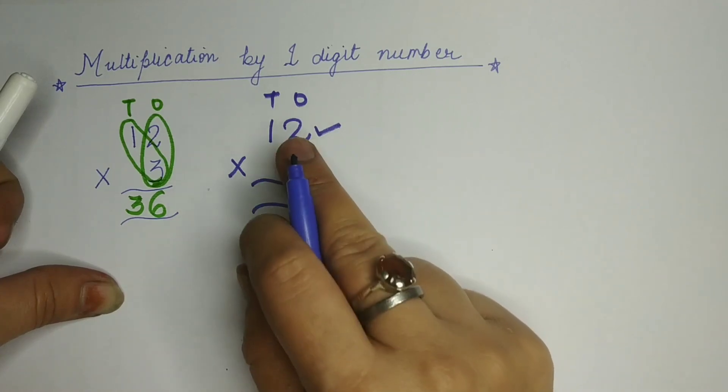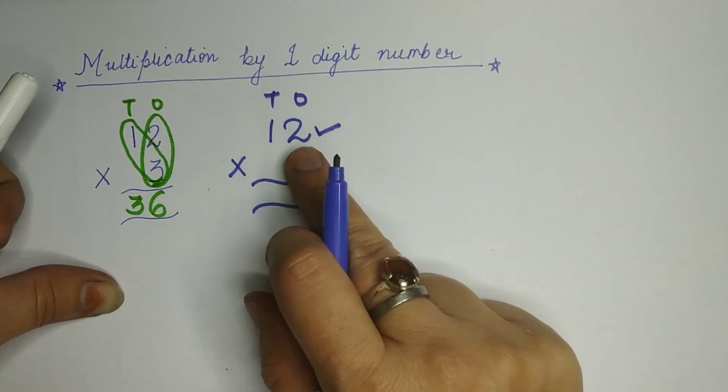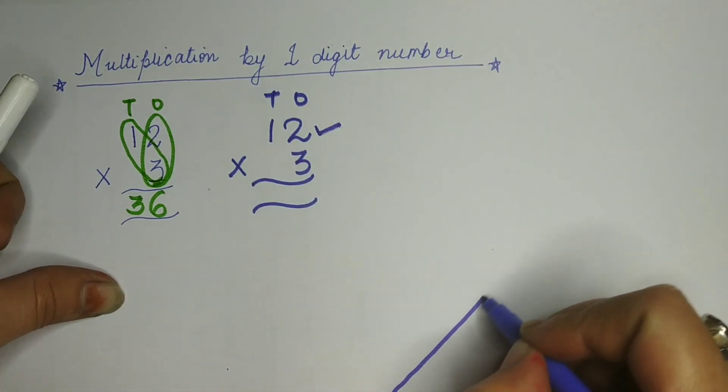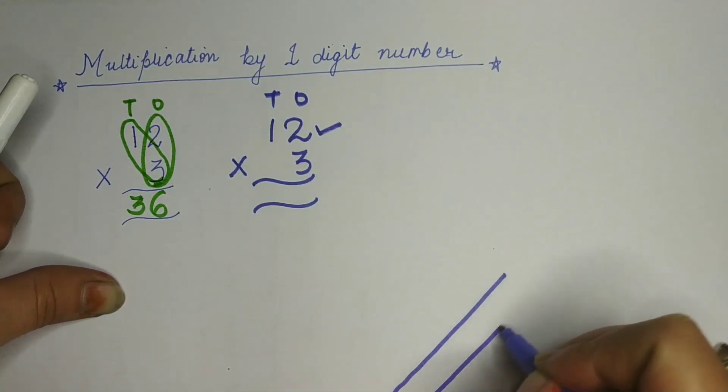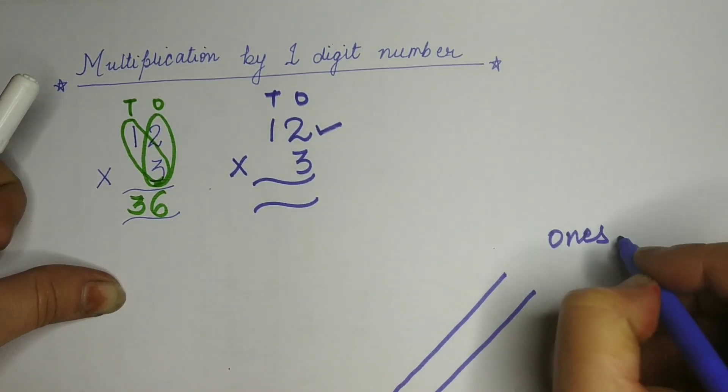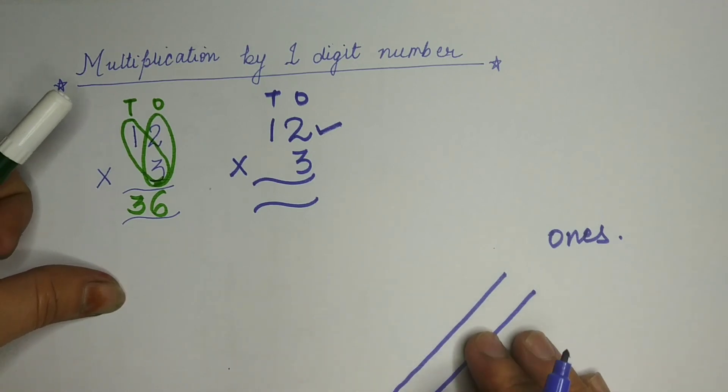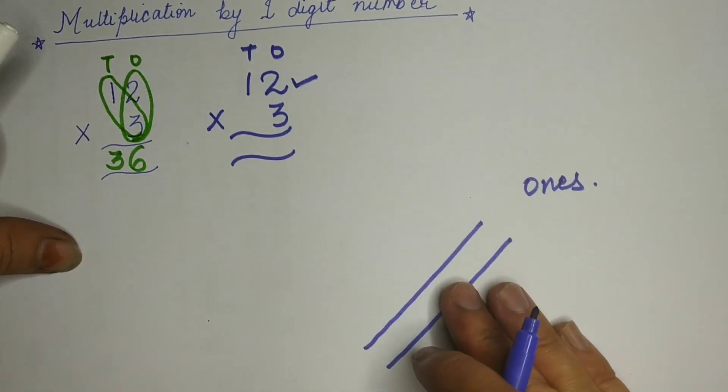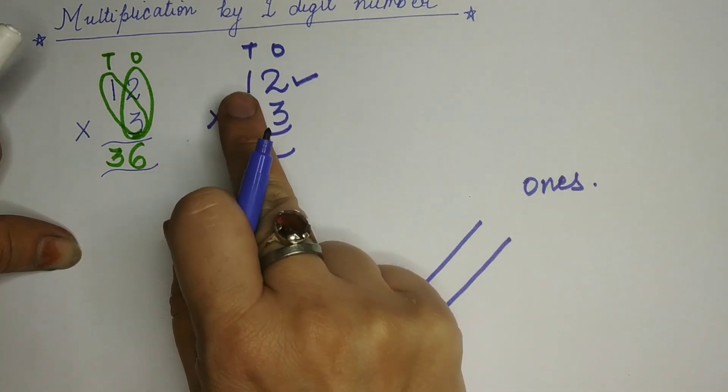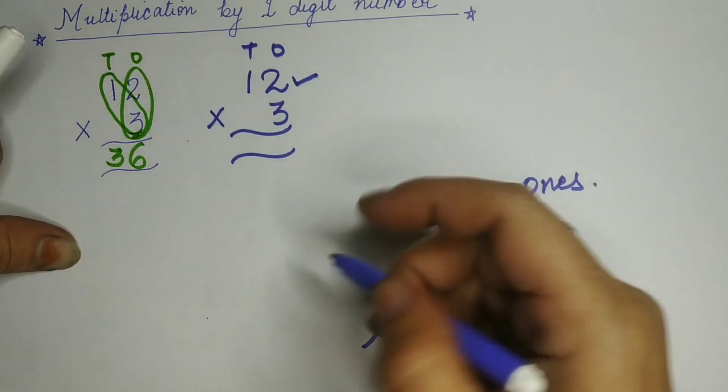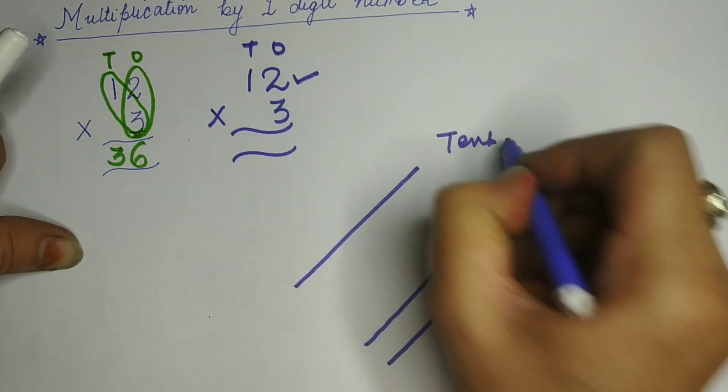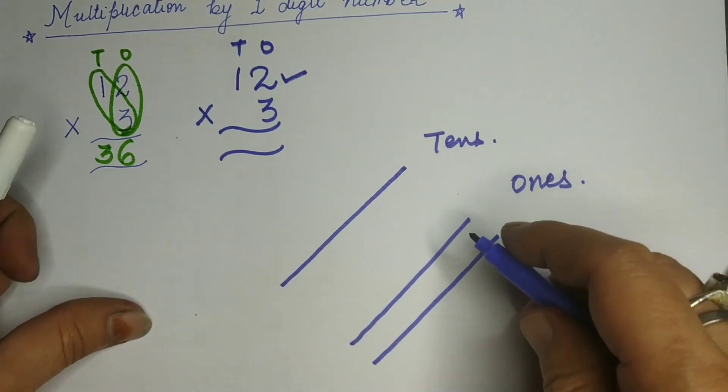We will take once digit. What number is there? That is 2. First of all, you are going to make 2 lines like this. Aap chaaho, toh yehaan likh sakte ho. For your betterment, I am going to write it. So, there is no as such confusion. 2 lines. Then, you are going to make for 10th digit. That is 1 line. Yeh, aapki tens ki hai. Thik hai? Is there no confusion?